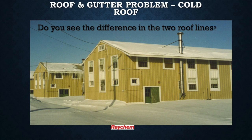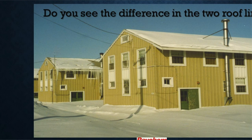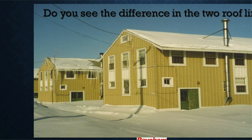So why do we need roof and gutter ice systems? In this picture you have two different buildings. When I do a lunch and learn I ask attendees what's the difference in the roof lines of these two buildings. One building has icicles — what we call ice dams — and the other one does not. The reason for that is because one building is heated and the other is not.